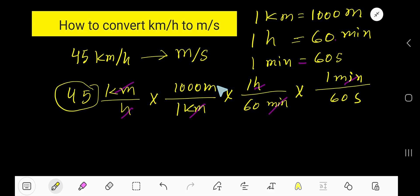So multiply top numbers together: 45 times 1000, divided by bottom numbers together: 60 times 60. Meter per second.